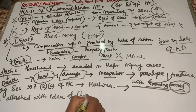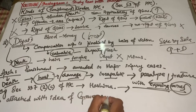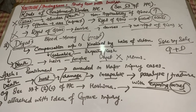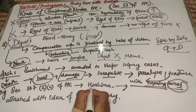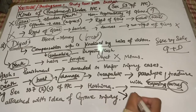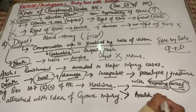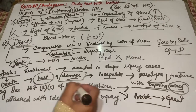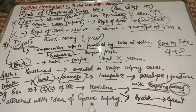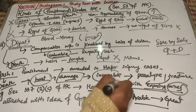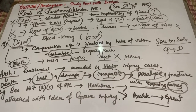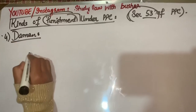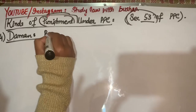Arsh is attached with the idea of grave injury. Jahan par aapko major injury cause ki ja rahi hai. Hashima jo hai, woh hamare paas ek Arabic word hai jiska matlab hai great — jahan aapko bahut zyada nukzaan pohanchaya ja raha ho.